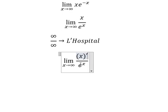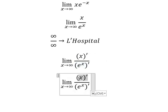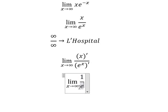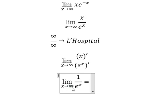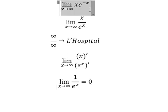That means we differentiate the numerator and denominator. The numerator gives 1, and the denominator gives e to the power of x. When x approaches positive infinity, e to the power of x goes to positive infinity. So 1 divided by positive infinity equals zero — and that is the answer for question number two.